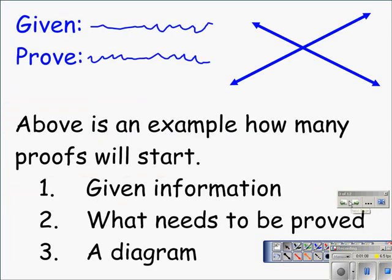Here we see the components of a quality proof: the given. Without the given, there's no way you can do a proof. You need to be given some information. You also need to know what you're going to prove, and that should also be supplied to you. And a diagram. A diagram may or may not be a necessary part of creating a proof, but it usually is helpful.